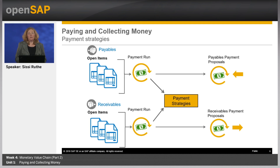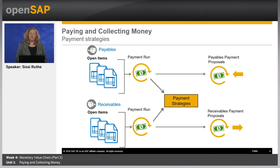For example, you can define in the payment strategy to pay with cash discount on the latest possible date. To reduce your implementation effort, the system comes with one default payment strategy which can be adjusted if necessary. You can also define additional payment strategies if needed.